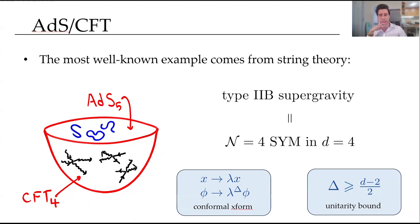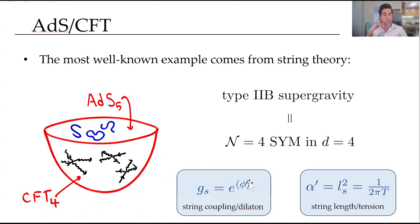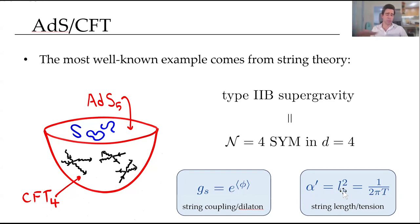What about type IIB supergravity? This is the low energy limit of a string theory. In the bulk of ADS I have open strings and closed strings — they can interact, join together, and split apart. There is a string coupling which controls the quantum corrections or string loop diagrams, given by the expectation value of the dilaton scalar field — it's a dimensionless coupling. There's also a string length or string tension, alpha prime, L being the string length which sets the energy scale of the theory. There are different limits you can consider by expanding these parameters when they're small.